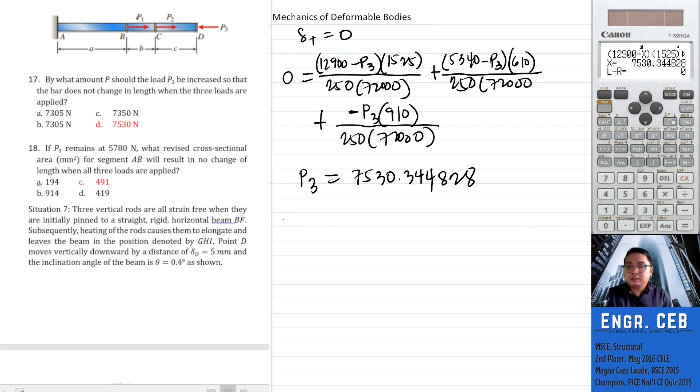Number 18: If P3 remains at 5780, what revised cross-sectional area for segment AB will result in no change of length when all three loads are applied? We can use the same equation, same condition - no change in length. So we have 12.9 minus P3 times 1525 over 250 times 72,000. The variable we need to change is the area of segment AB.